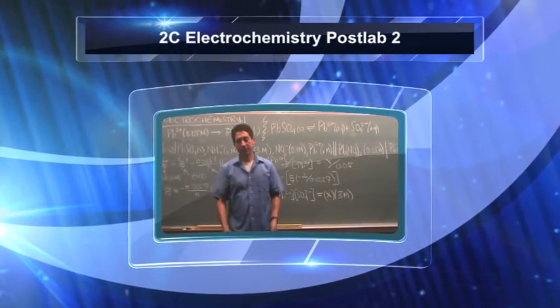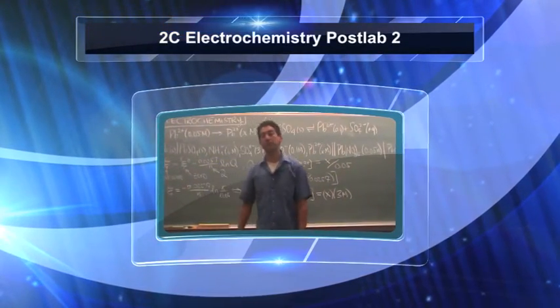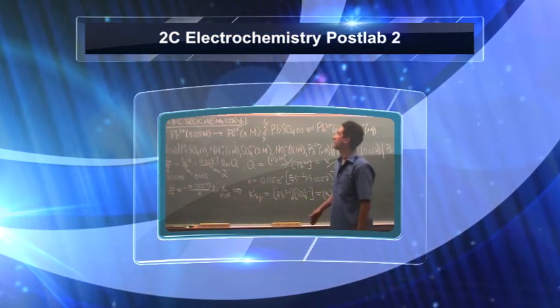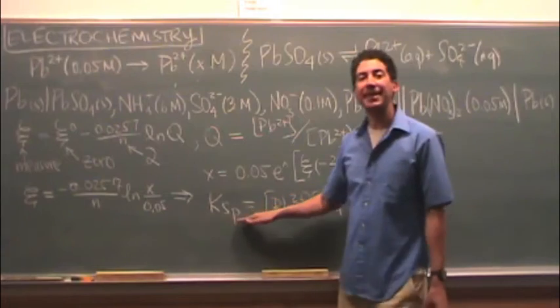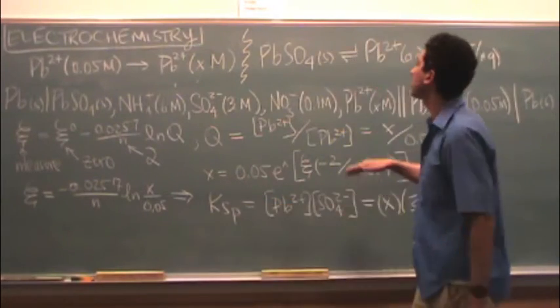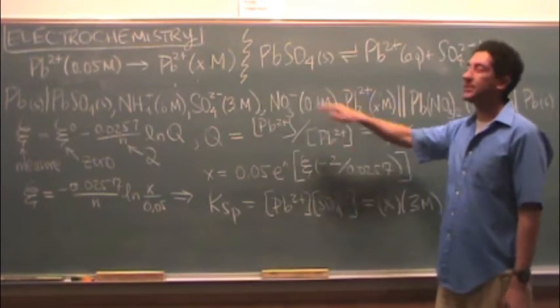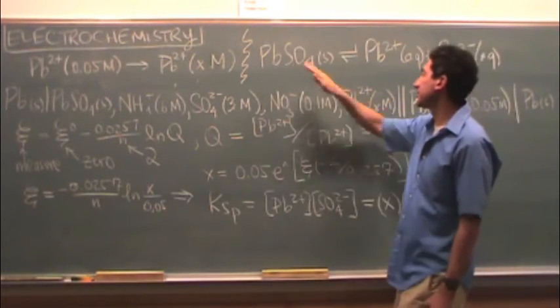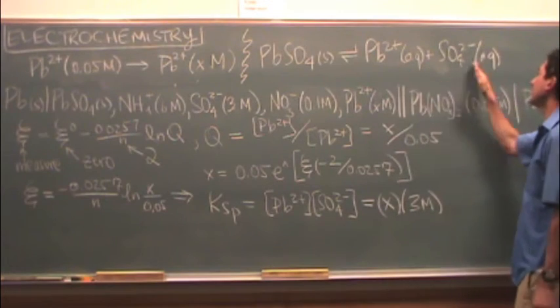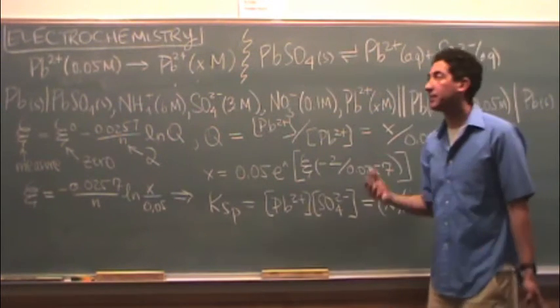Here's the very last part of the electrochemistry lab and how to solve for it. In this last part of the electrochemistry lab, we're trying to find Ksp for a very particular reaction, the lead sulfate. So Ksp, or the solubility of Ksp, is it goes to lead 2 plus and sulfate.